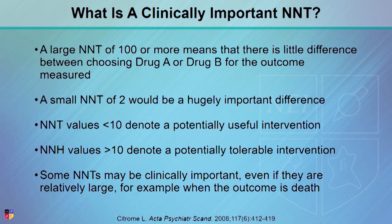An NNT value of less than 10 usually denotes something you'll notice and potentially useful in day-to-day practice. Greater than 10, probably not — but for NNH, you want greater than 10; you don't want to deal with that adverse event frequently. However, some NNTs may actually be quite important despite a high value. If you're treating something very difficult to treat and you've tried all sorts of things, you may try something less efficacious because you have no other choice. So we have to use our brains when looking at NNT and NNH.